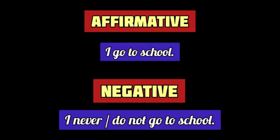For example, 'I go to school' is an assertive sentence of the affirmative type. It's a positive statement and the pattern of the sentence is the subject plus the verb followed by the other words. But the sentence 'I do not go to school' or 'I never go to school' is an example of the assertive sentence of the negative type. It's a negative statement with the use of never or not. So, an assertive sentence makes a statement, positive or negative, and has the structure of subject plus verb plus other words.